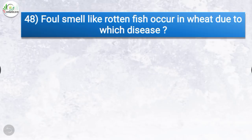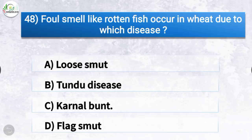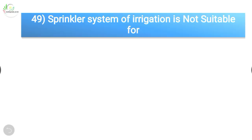Question number 48: Foul smell like rotten fish occurs in wheat due to which disease? The correct answer is option C, Karnal bunt. Foul smell like rotten fish occurs in wheat due to Karnal bunt.